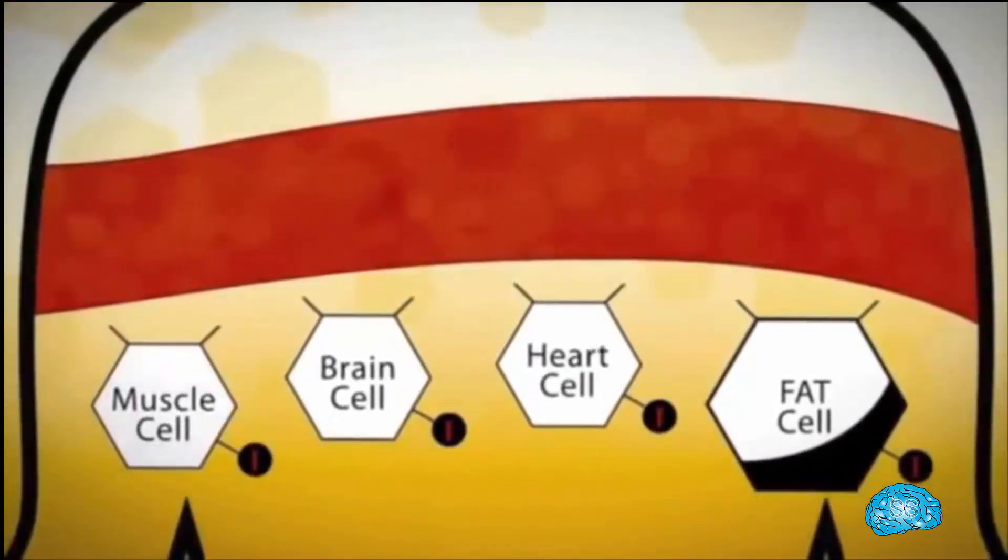Once all the glucose in the blood is utilized, the insulin closes the gates of all the cells and slowly leaves the body. More production of insulin stops.